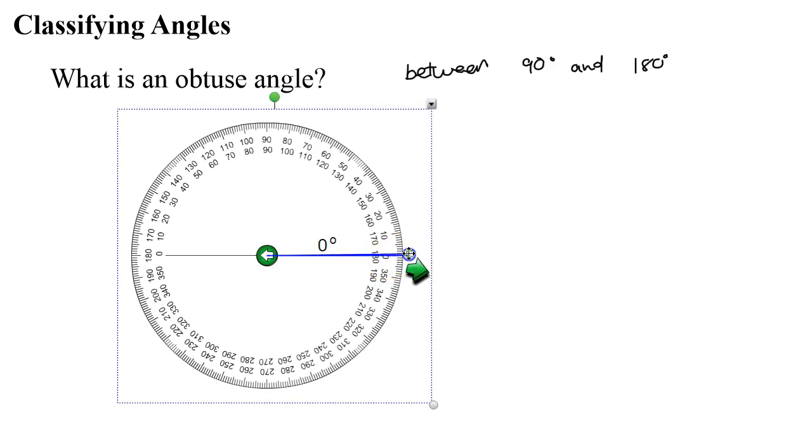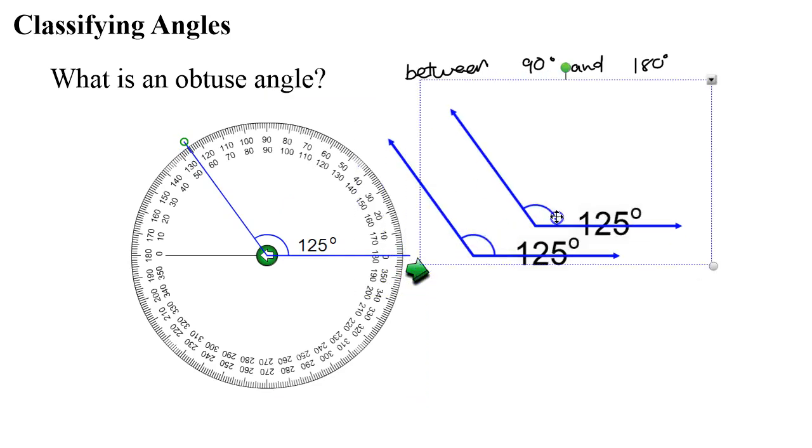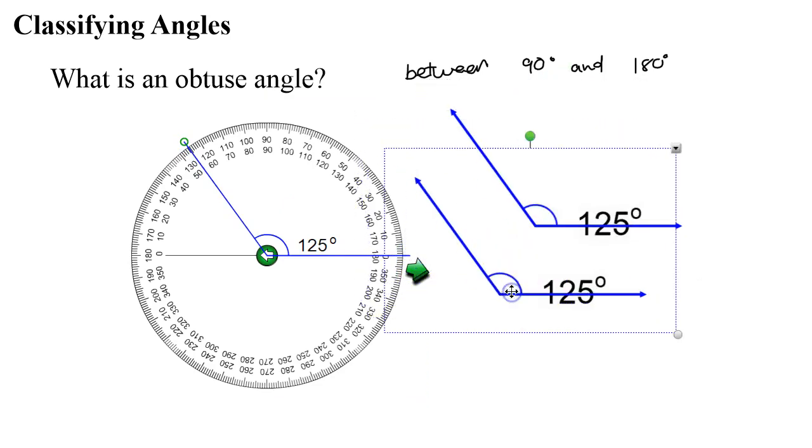So looking at our protractor, it is in the region between 90 and 180. So an example of an obtuse angle might be 125 degrees.